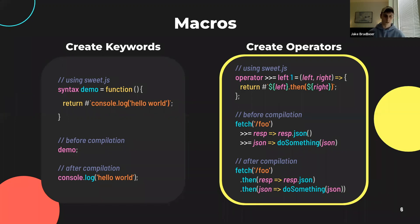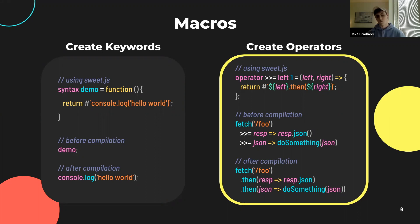These are just a couple of examples of macros in Sweet.js, and there are many other possibilities. You should definitely read about them on the Sweet.js docs — there's lots of good information there. In general, creating macros may be useful to shorten syntax you're using often, create new operators entirely, or even modify existing operators. For example, you could rewrite loose equality to be strict equality.